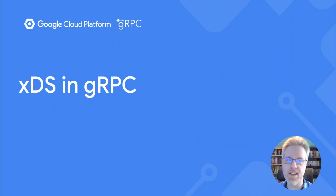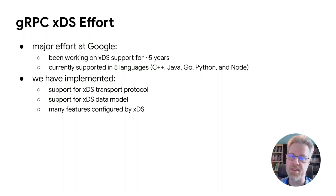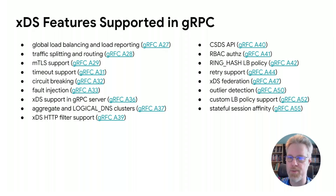Now that I've given a basic intro to XDS, let's talk about our effort to support XDS in gRPC. This has been a pretty major effort — it's been going on for about five years and is still under active development. We currently support XDS in five languages: C++, Java, Go, Python, and Node. There are three main parts to supporting XDS in gRPC: support for the XDS transport protocol, support for the XDS data model, and implementing the actual features configured by XDS. We've implemented many XDS-enabled features including basic load balancing, XDS routing support, and security features like MTLS and RBAC.